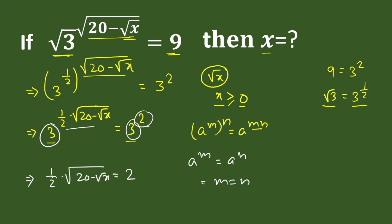To remove the denominator 2, we multiply both sides by 2. On the left hand side, 2 and 2 cancel. So on the left hand side we are left with square root of (20 minus square root x), and on the right hand side 2 multiplied by 2 is 4.